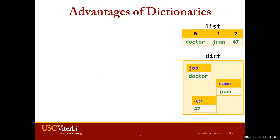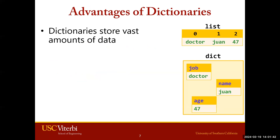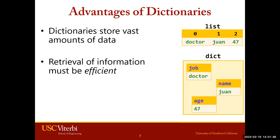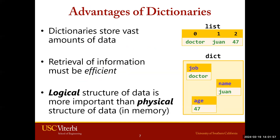There are advantages to using dictionaries. Dictionaries allow you to store large amounts of information — it's a useful structure when you have a lot of data. The retrieval of information within a dictionary is fast, which allows you to create efficient code. The last advantage is its logical structure of data, which is more important than the physical structure. Dictionaries are organized with key-value pairs where two values are connected. So job and doctor are associated with each other, whereas in lists, doctor is associated with index zero with no relational meaning.